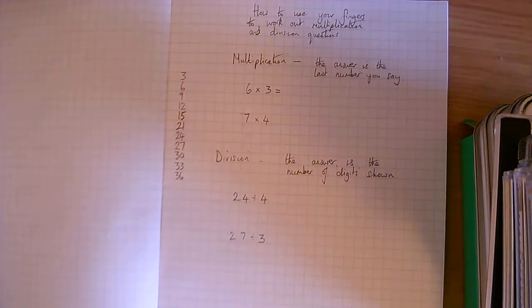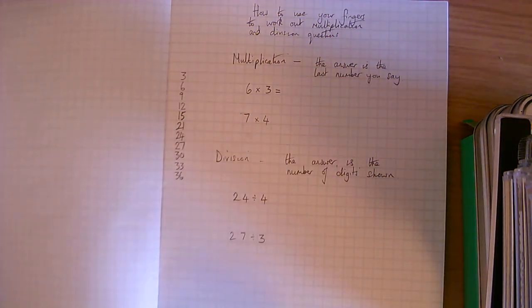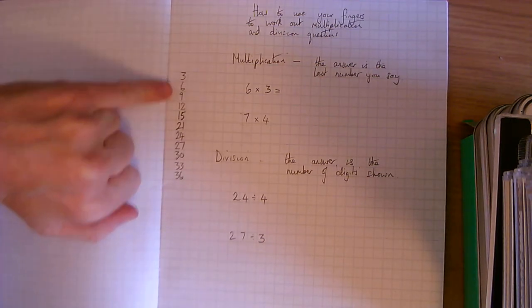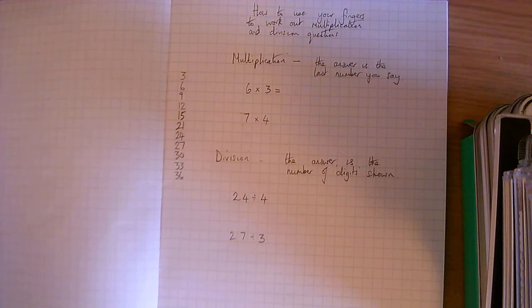So we're going to use our fingers, we've got 6 times 3. Each digit on here is going to be worth one lot of 3. Now if you are struggling to sequence times tables, especially the harder ones, make sure you write them out first to help you, or have a printed sheet with all the multiplication answers on just to help you if you need that to start with.